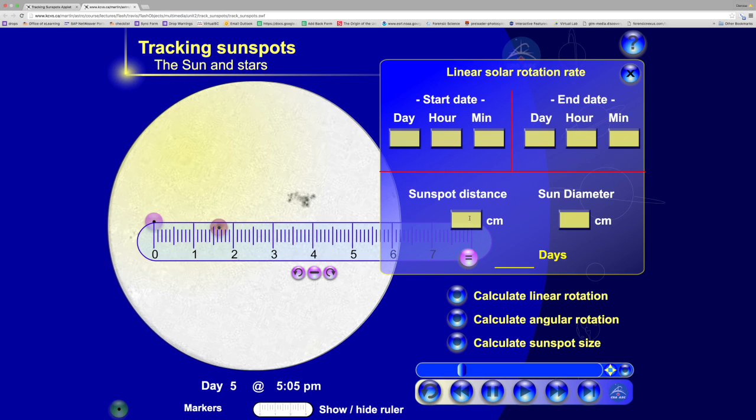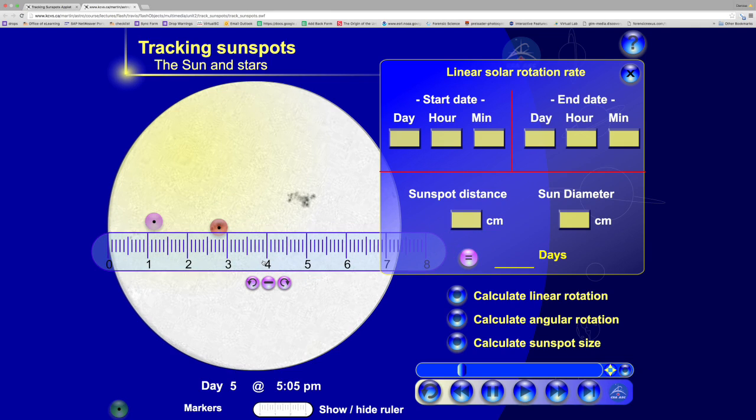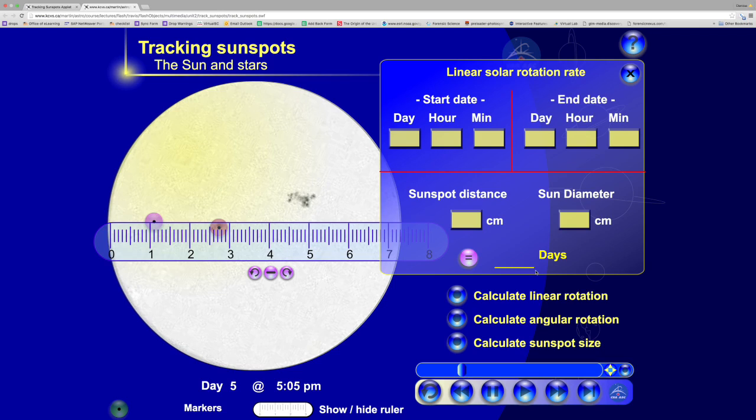Then you're also going to measure the diameter of the Sun, going from one end to the other straight across, and write that measurement in. That will give you the movement of that sunspot, or the differential rotation, in that period of the Sun.